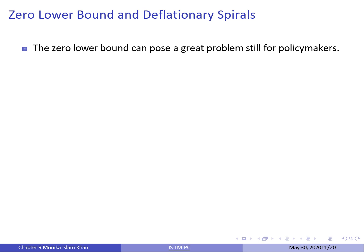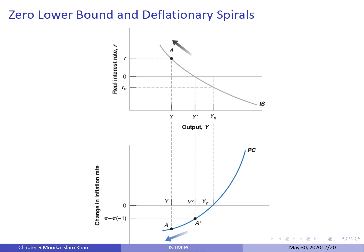Our description of adjustment makes it look relatively easy: if output is too high, the central bank increases the policy rate until output returns to potential; if output is too low, it decreases the policy rate. However, this is too optimistic, and things can go wrong — specifically due to the combination of the zero lower bound and deflation.